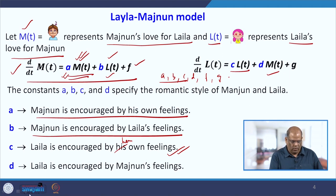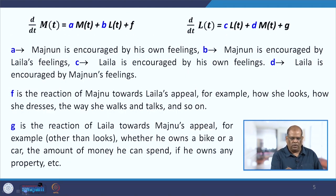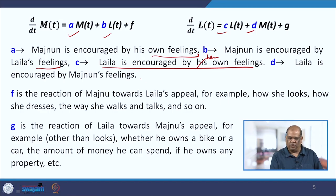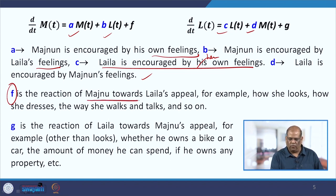Now let us look into the analysis. As explained, A and B represent the encouragement of Majnu from his own feelings and from Laila's feelings respectively. C and D are the rates at which Laila is encouraged by her own feeling and by Majnu's feelings. F is the reaction of Majnu towards Laila's appeal — for example, how she looks, how she dresses, the way she walks and talks, and her social background.